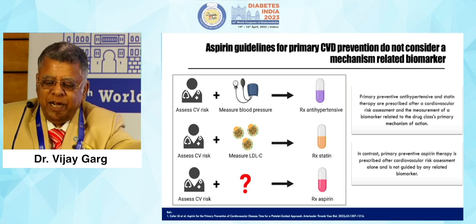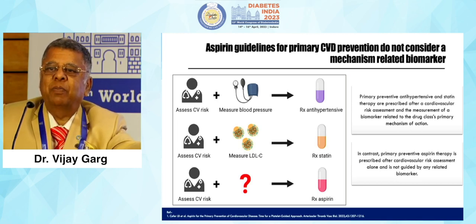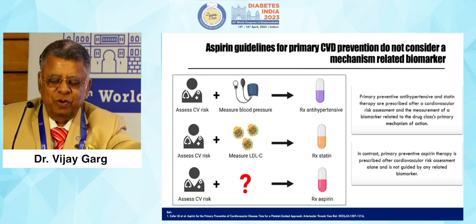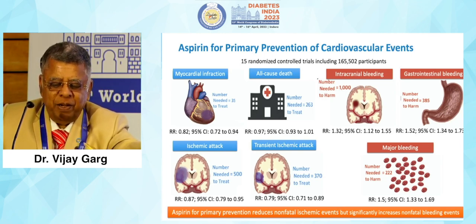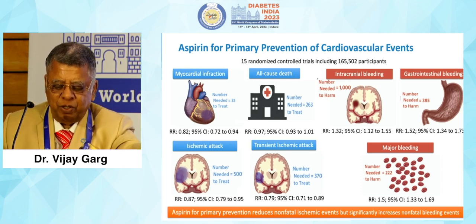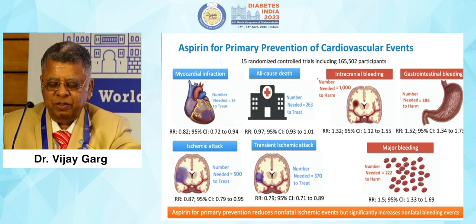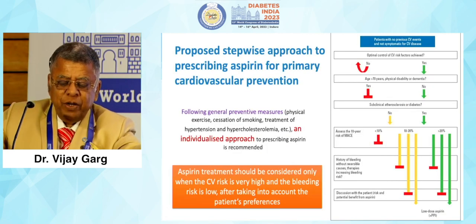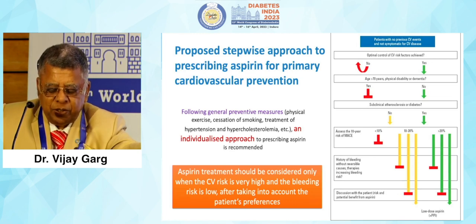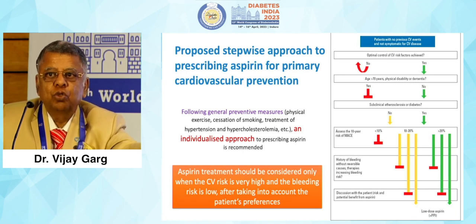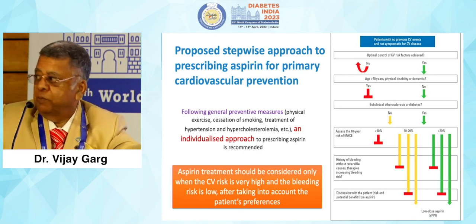You have a guideline for CVD prevention: do not consider a mechanism-related biomarker for aspirin. For blood pressure, you measure blood pressure. For statins, you measure LDL-C. For aspirin, there is no biomarker — we have to give it based on treatment assessment. Aspirin prevents cardiovascular risk, MI, ischemic attack, but bleeding risk must be considered. Aspirin in primary prevention reduces non-fatal ischemic events, but significantly increases non-fatal bleeding. Aspirin should be considered only when CV risk is high and bleeding risk is acceptable. If the score is more than 20%, give aspirin; if the score is less, do not give it.